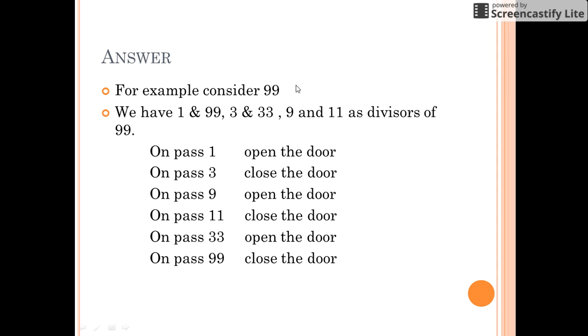Let us take one more example. If we consider door number 99, the factors of 99 are 1, 99, 3, 33, 9, and 11.